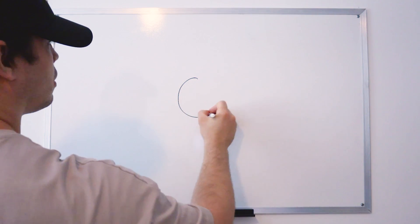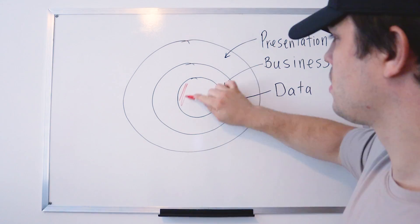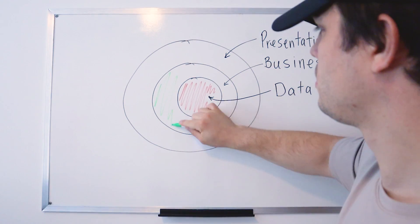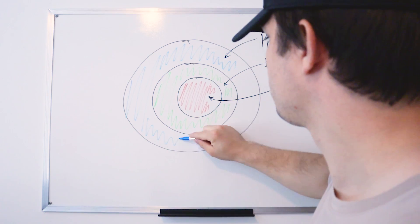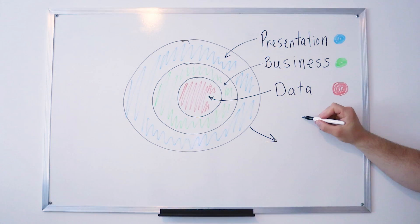In this video I will explain how clean architecture works visually. To simplify everything, we will separate the clean architecture into three different layers.